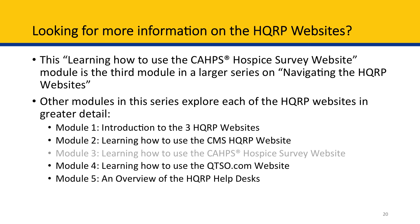This concludes the module Learning How to Use the CAHPS Hospice Survey Website. After reviewing this module, you should have a better understanding of the type of information housed on the CAHPS Hospice Survey website, as well as how to navigate the website to find updates, informational podcasts, and important forms. This is the third of five modules in the series Navigating the HQRP Websites. We encourage you to view the other training modules in this series for additional information. Thank you for viewing this presentation. The information presented was correct as of the date it was recorded. This presentation is not a legal document; official Medicare program legal guidance is contained in the relevant statutes, regulations, and rulings.